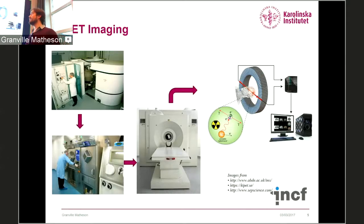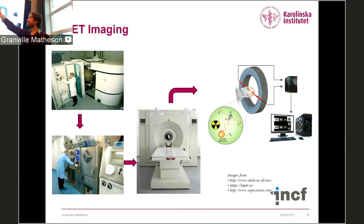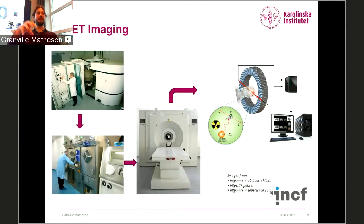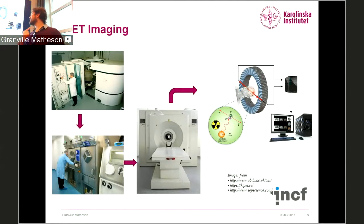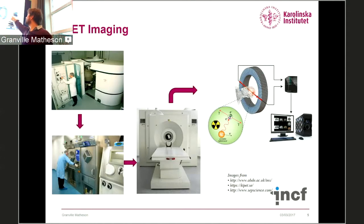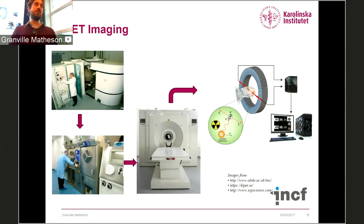Just to briefly explain what PET is: physicists work with a cyclotron that creates radionuclides — radioactive atoms. They send the radionuclides to chemists who attach them to ligands that bind to proteins in the brain. The chemists create the ligands and send them to the camera, which is then injected into participants and travels up into the brain. As the radionuclides decay, they release a positron that travels a short distance, collides with an electron releasing two gamma photons at approximately 180 degrees, which are detected in the detector ring, allowing us to reconstruct PET images frame by frame.